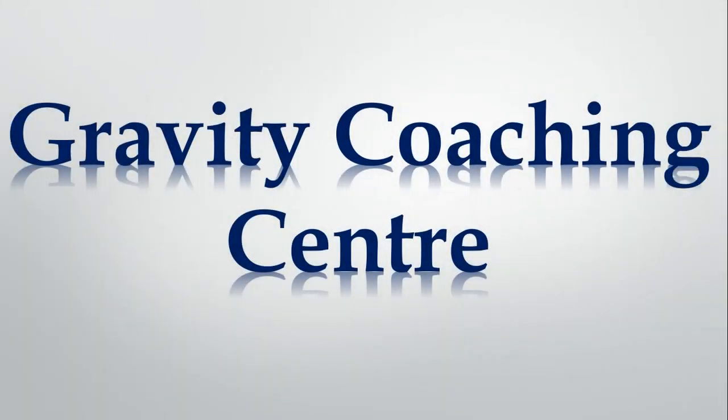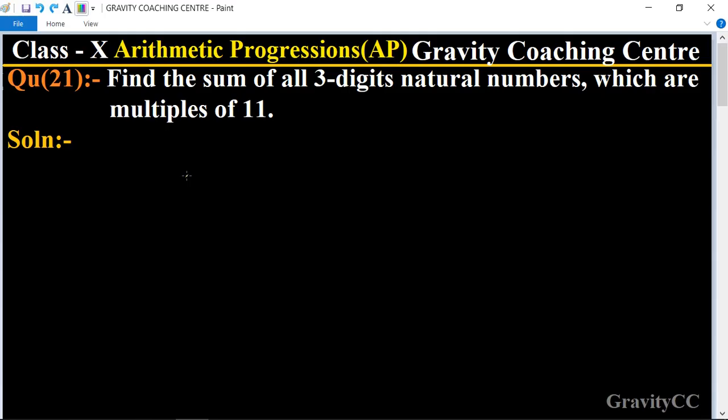Welcome to our channel Gravity Coaching Center. Class 10, Chapter Arithmetic Progressions, Question Number 21. Find the sum of all three-digit natural numbers which are multiples of 11. So first we write all the three-digit natural numbers which are multiples of 11. The first one is 110 and the second is 121.